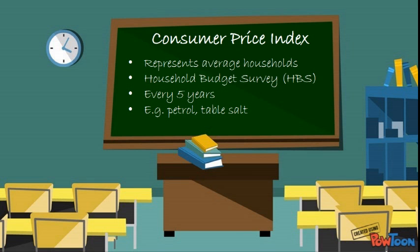This basket does not apply to any particular person or family, but represents an average household in Ireland. The goods and services which are listed and included in the basket are determined from the Household Budget Survey, HBS. This survey is conducted every five years to reflect up-to-date purchasing patterns. The relative importance, commonly called weights, and the greater the importance, therefore the greater the weight of these goods and services, are also decided from the information collected in the Household Budget Survey.